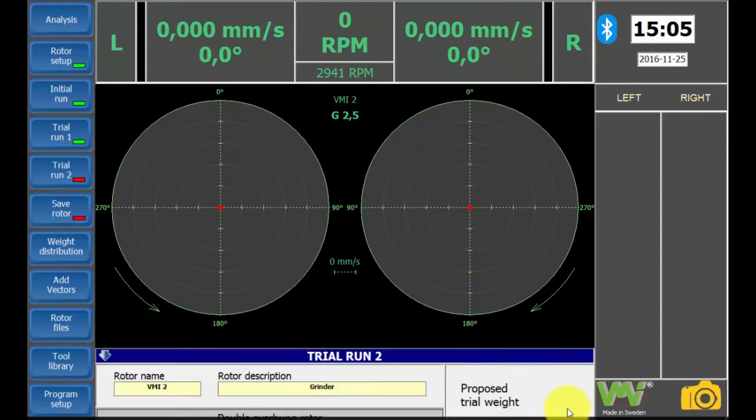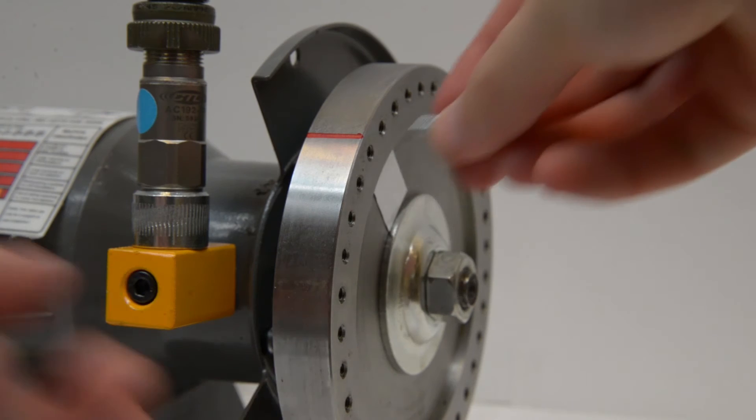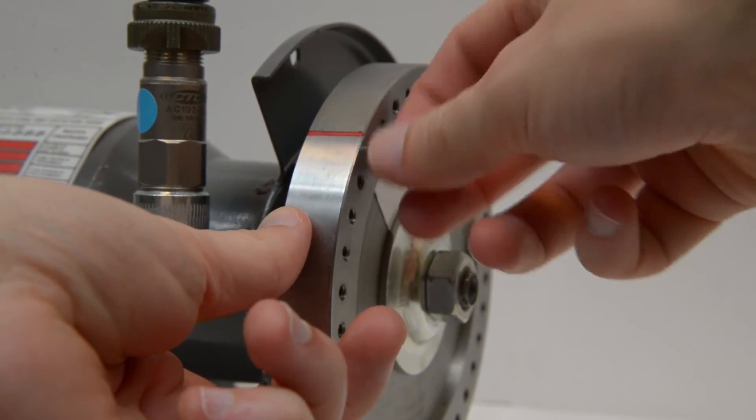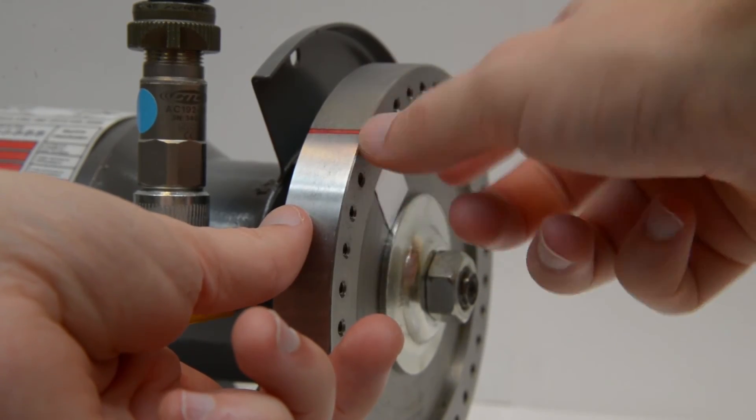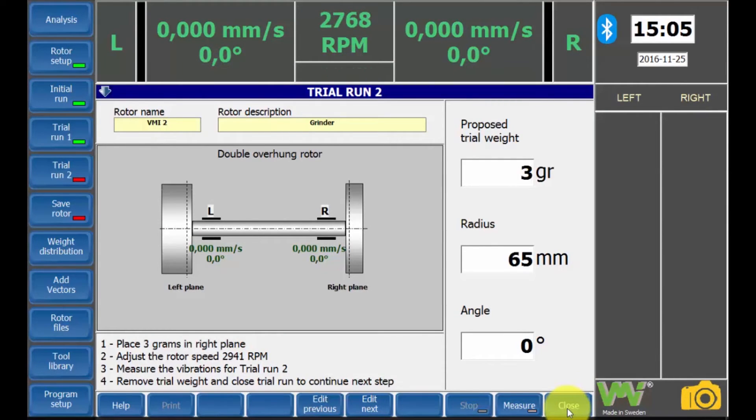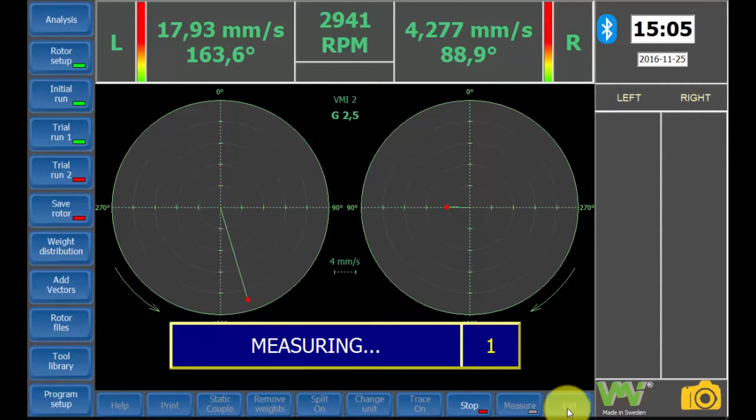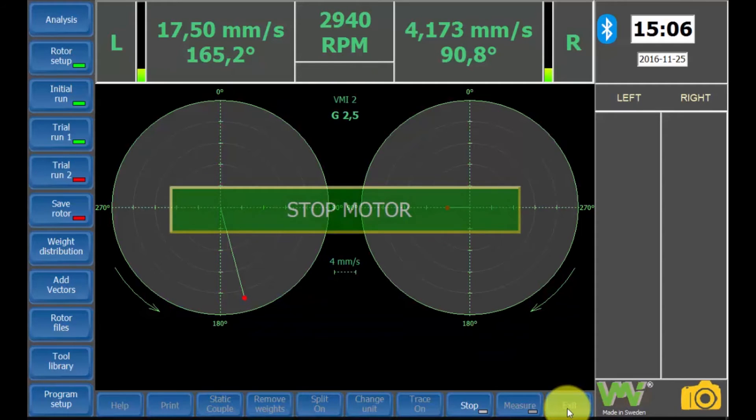Press the close button and the trial run 2 screen will appear. Also here, we will have a trial weight of 3 grams. Remove the weight from the left side and mount instead a weight on the right side of the rotor. This is as well placed at zero degrees. Start the motor again. When the measuring is done and the stop sign is displayed, stop the motor.